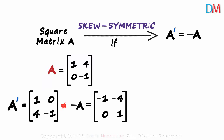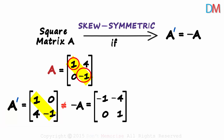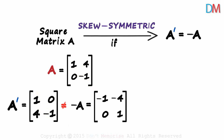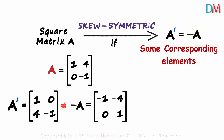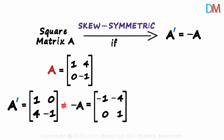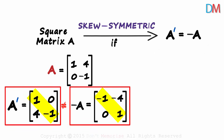This tells us something interesting. Focus on the diagonal elements of A — specifically the leading diagonal. Notice that the diagonal elements do not change for the transpose: 1 and minus 1 remain 1 and minus 1. But for negative A, the diagonal elements are also negated, just like the other elements. For skew symmetry, A transpose must equal negative A, meaning all corresponding elements must be equal — so can the diagonal elements ever match?